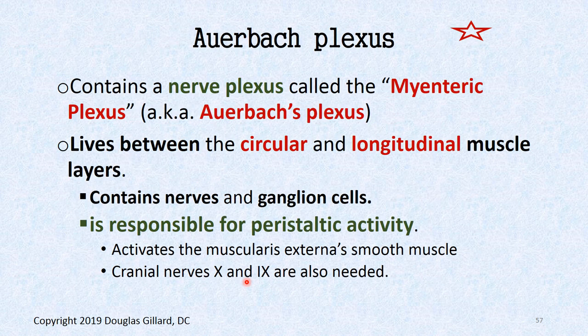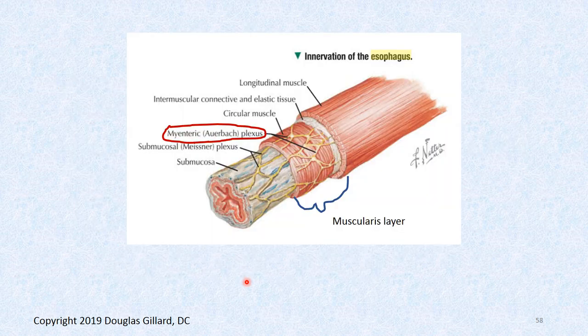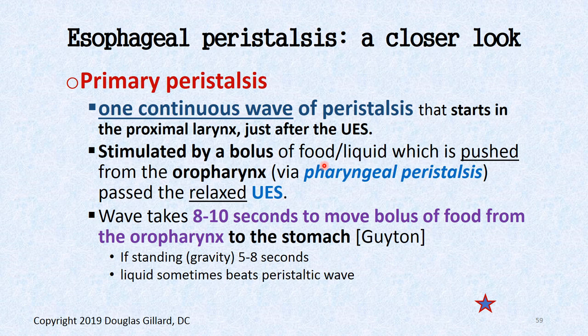Auerbach's plexus — also called the myenteric plexus — lives in the muscular layer, specifically between the circular and longitudinal muscle layers. It contains nerves and ganglia and is the main generator of peristaltic activity. It is supplied by cranial nerves 10 and 9. Damage to this plexus causes all sorts of swallowing problems — we'll talk about nutcracker esophagus, achalasia, and other conditions where peristalsis goes wrong.